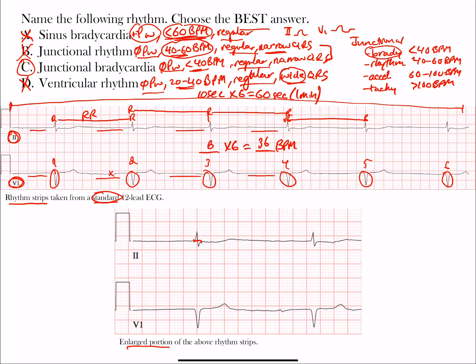Our strip fits the description of junctional bradycardia at 36 bpm. To separate it from ventricular rhythm: ventricular rhythms involve slow cell depolarization in the ventricles and delayed intraventricular conduction, which produces those wide QRS complexes — which we do not see here. So the best answer is junctional bradycardia. That's the end of this lecture; I hope you learned something.